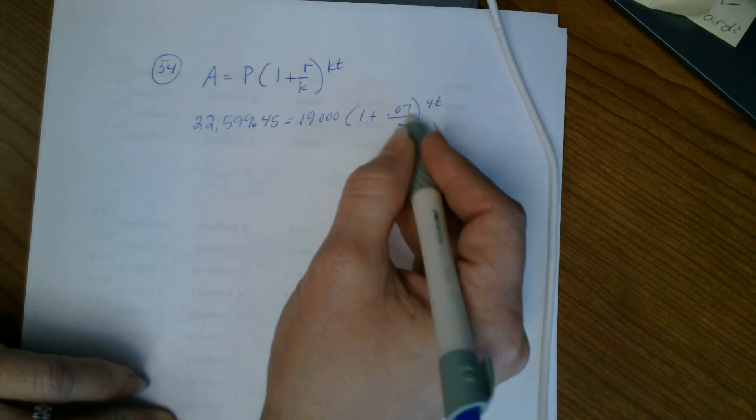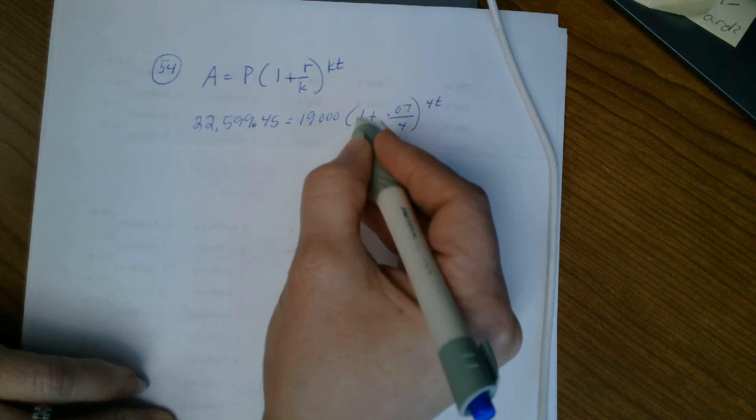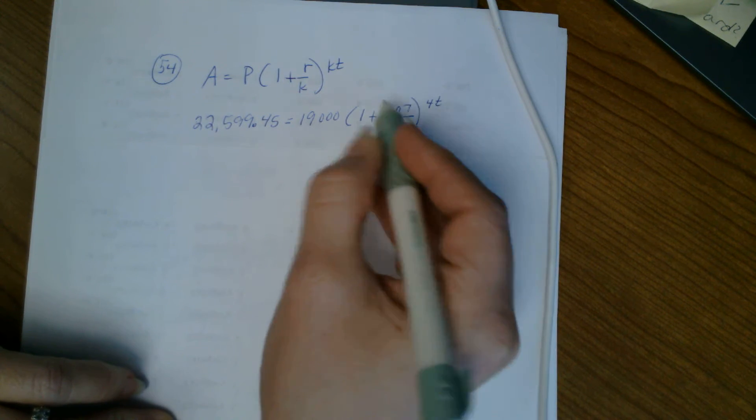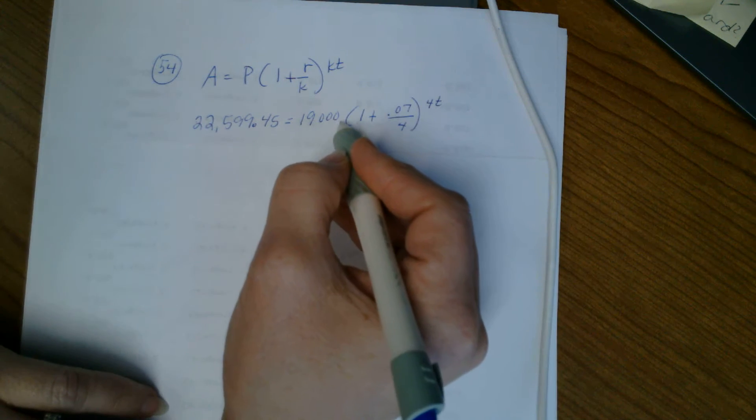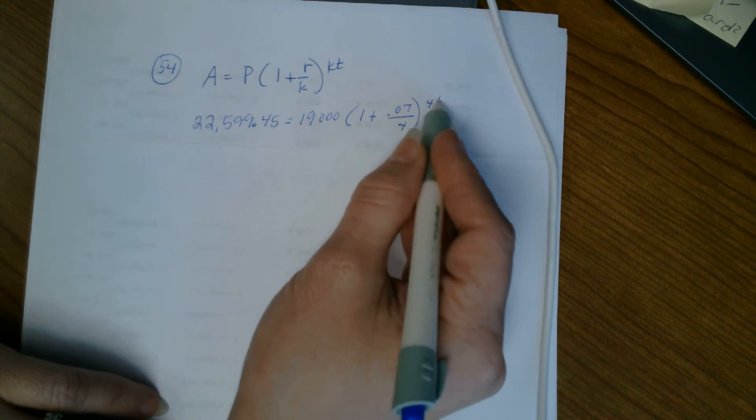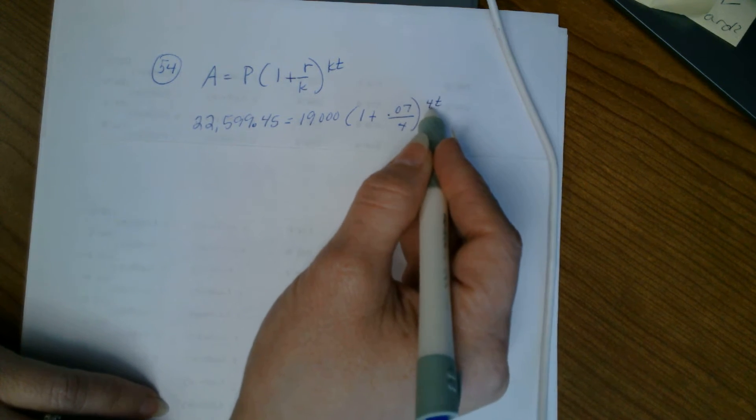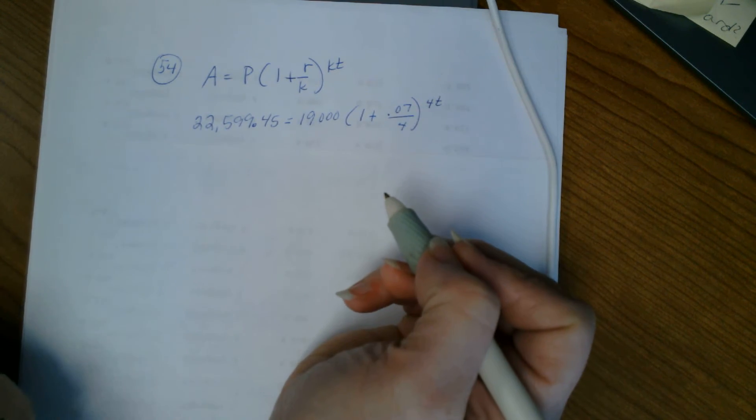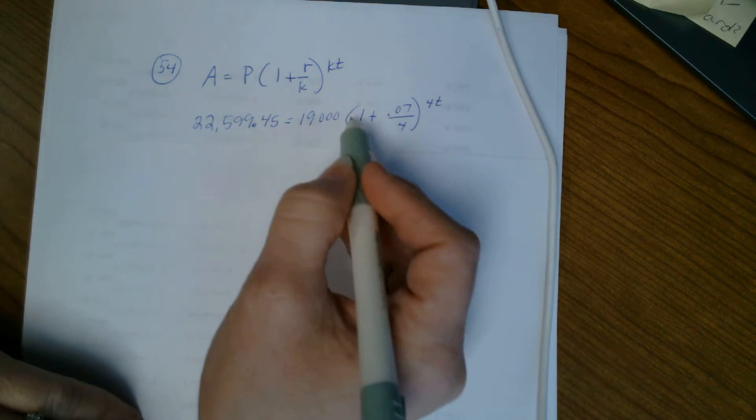And also we cannot multiply this together like you might want to do because the exponent supersedes that in the order of operation. So the first thing you can do, you can always simplify that, but then the first operation is to divide out the 19,000 to each side.